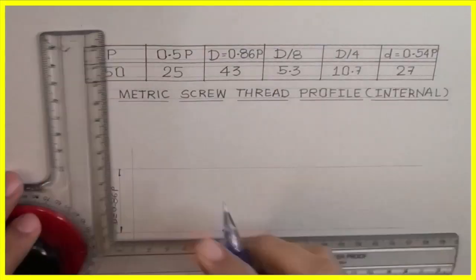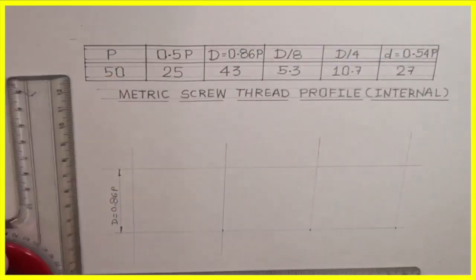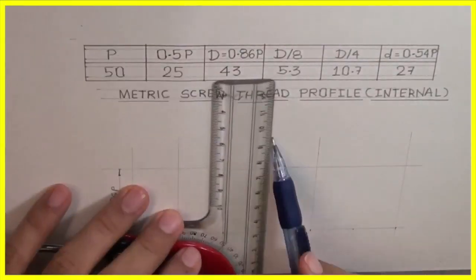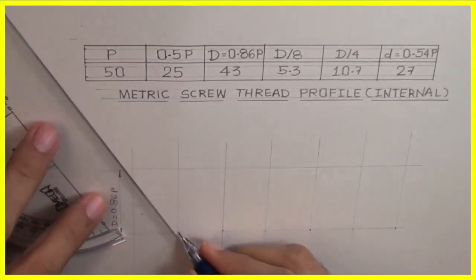Then we will mark pitch. Then we will mark p by 2 and we will draw a triangle like this.